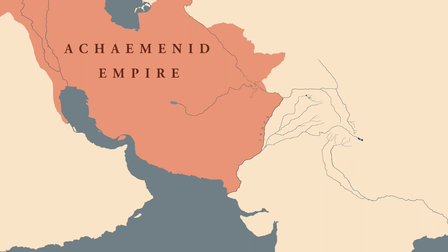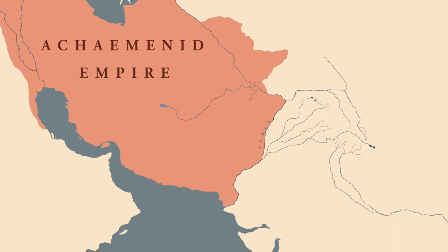Most scholars believe the Persian conquest extended up to the Indus River in the north, though some argue it reached as far as the Jhelum River. However, when Alexander invaded India and crossed the Indus River, he did not find any Persian satraps — the governors of the Persian Empire — suggesting the Persian Empire did not control the area east of the Indus. That said, Persian influence was still present east of the Indus, where small kings used Persian titles for themselves.